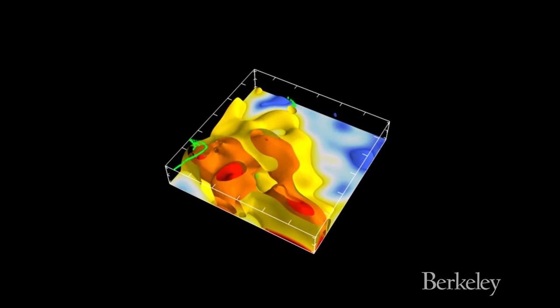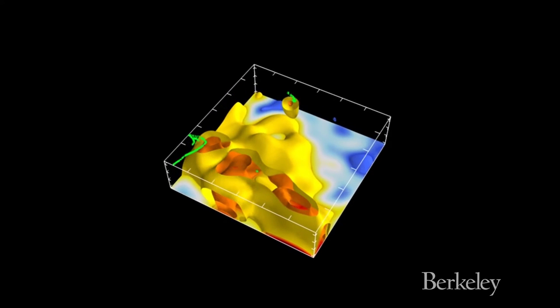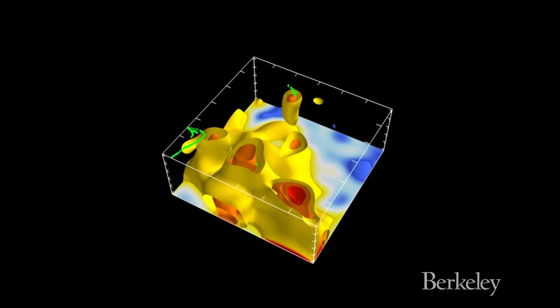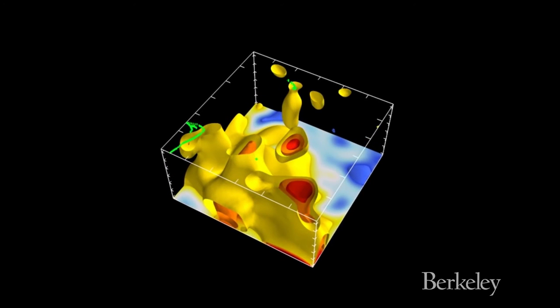Over millions of years, the hot plumes, as much as 700 degrees hotter than surrounding rock, move 1,800 miles up through the mantle.